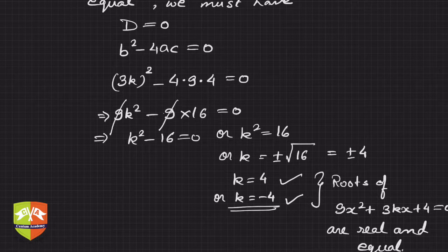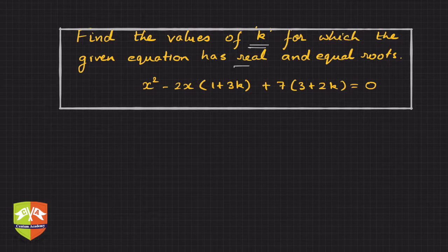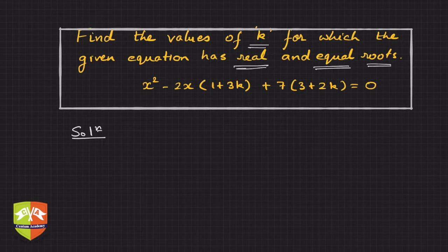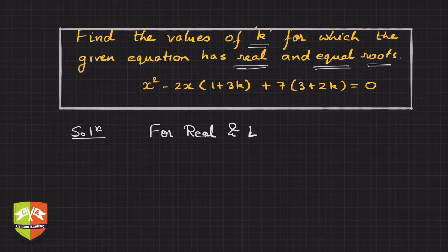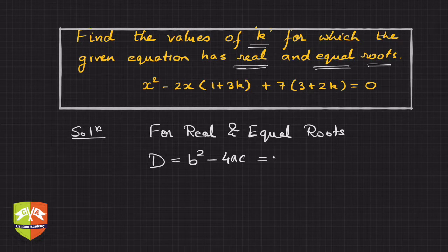Let us take another question. We again have to find the value of k for which the given equation has real and equal roots. By now you all know the criteria: for real and equal roots of a quadratic equation, we must have D — which is b squared minus 4ac — equal to zero.